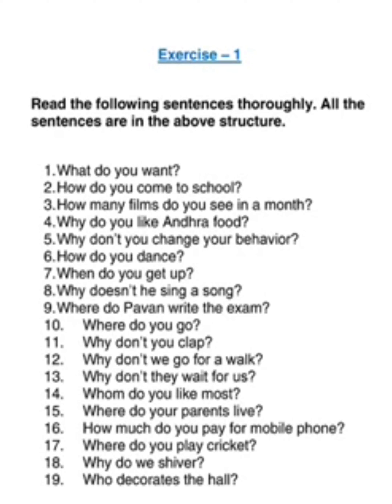WH can have many words - for example, 'how many films'. You can't say 'how many films you see in a month'; in correct English you say 'how many films do you see in a month', because it's a regular action and a WH question needing do/don't/does/doesn't. Further examples: Why do you like Andhra food? Why don't you change your behavior? With 'you', don't comes before 'you', and WH comes before 'don't'. Start the sentence with WH, then immediately give the helping verb do, does, don't, or doesn't.